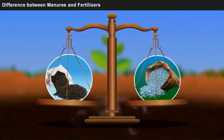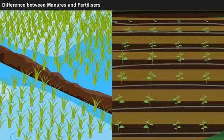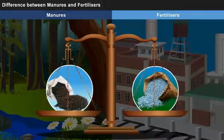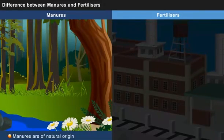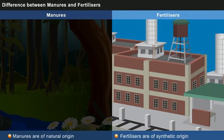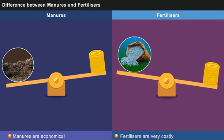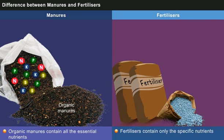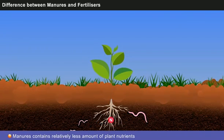Now let us discuss about the differences between manures and fertilizers. It is very necessary to know the differences in order to apply them based upon the cultivation requirements. Manures are of natural origin, whereas fertilizers are of synthetic origin. Manures are economical, whereas fertilizers are very costly. Organic manures contain all the essential nutrients, whereas fertilizers contain only the specific nutrients. Even though manures have all the essential nutrients, they contain a relatively less amount of plant nutrients.